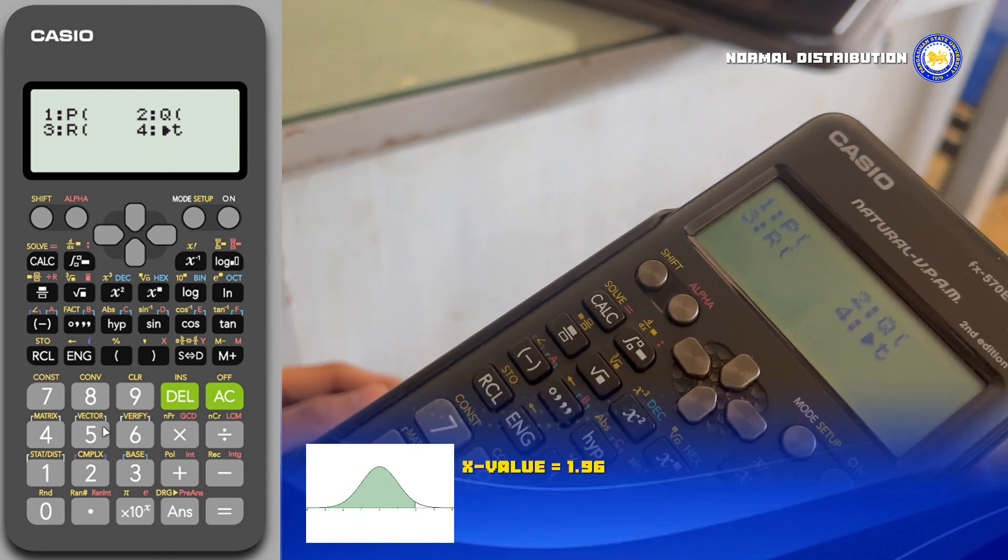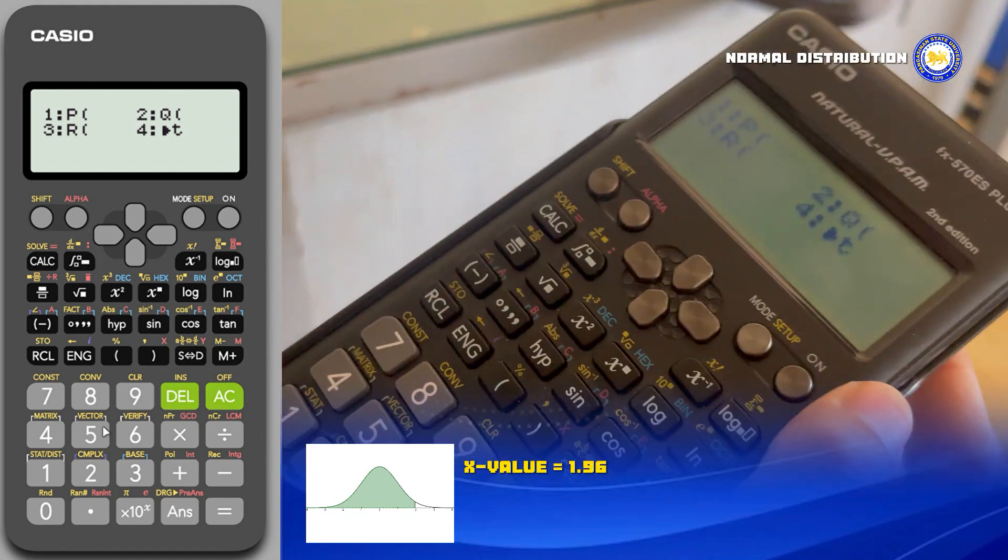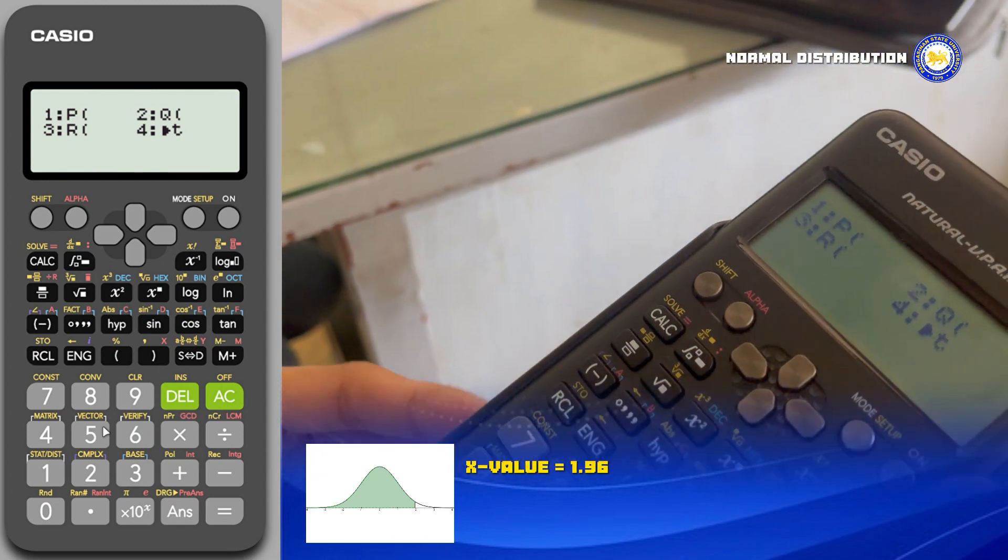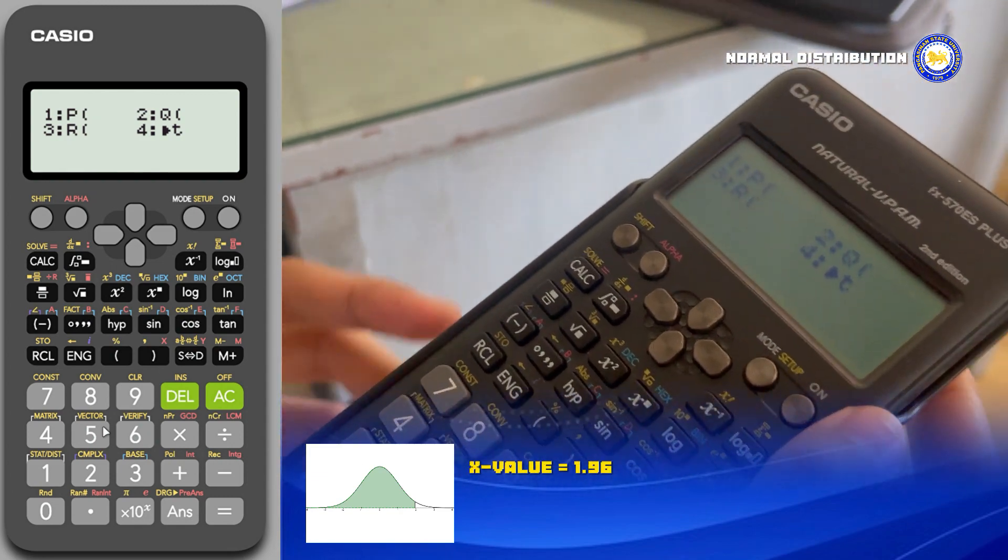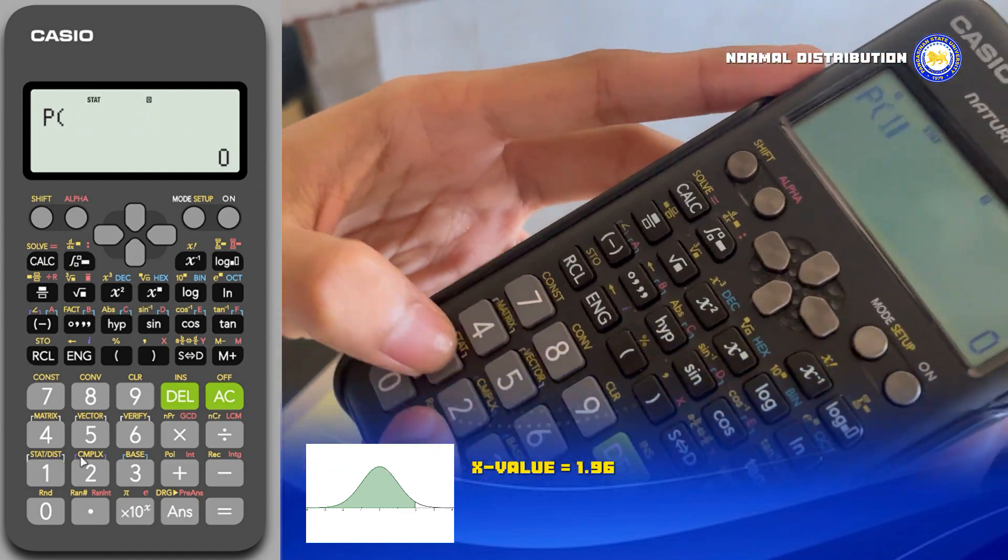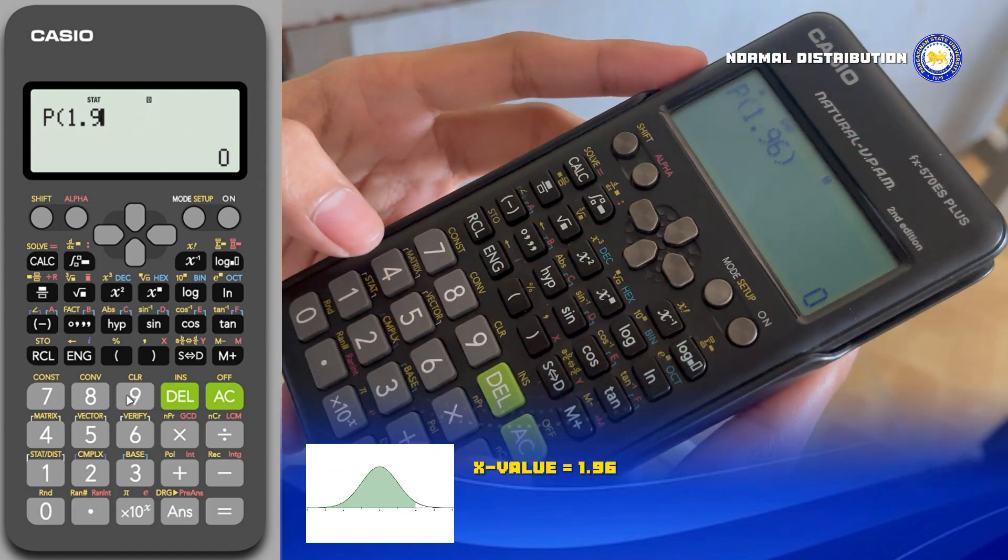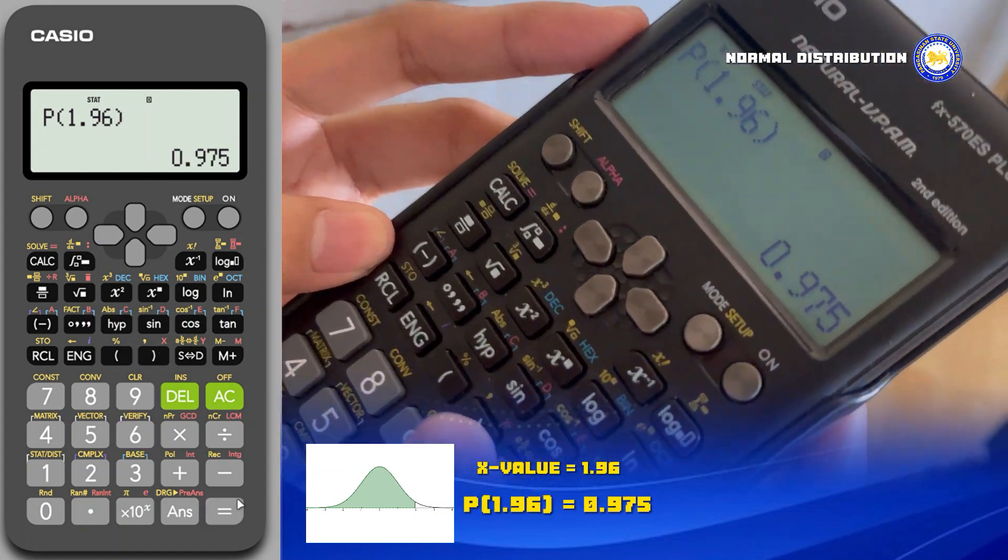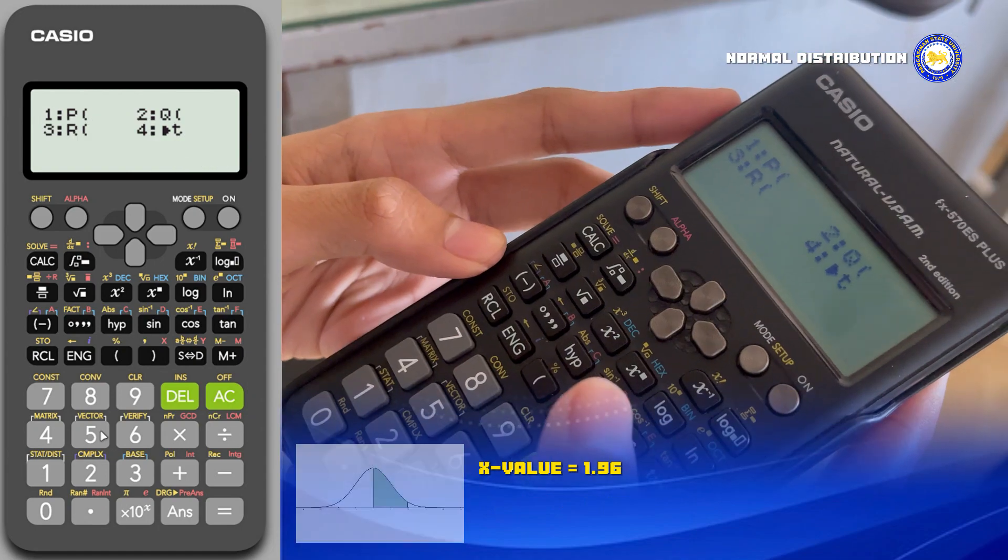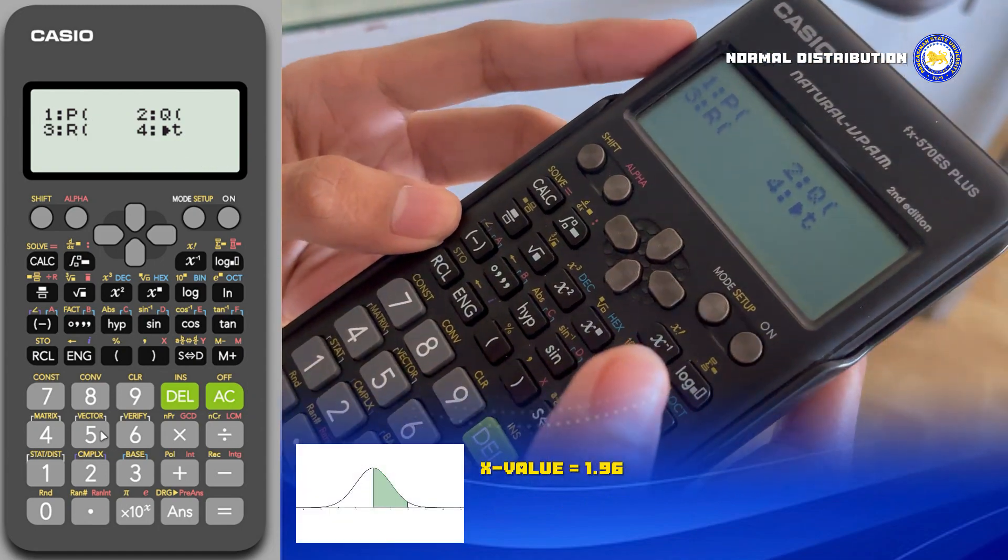Suppose our example here, we have three problems. For the first problem we can see that the diagram is shaded to the left with the value of x which is 1.96. Now following instructions before, choose P and input the value of x which is 1.96 and close it with the parentheses, and now we are going to get our answer which is 0.975.